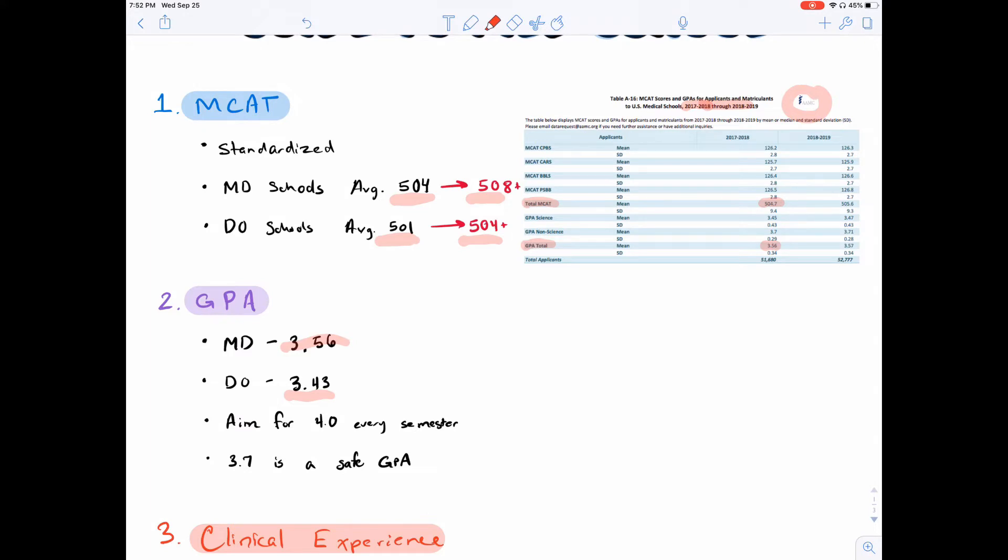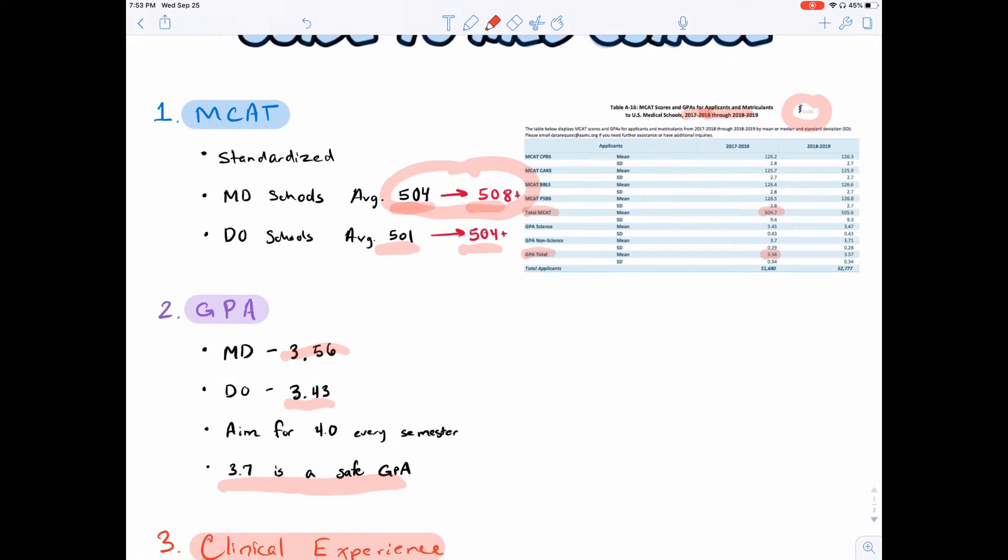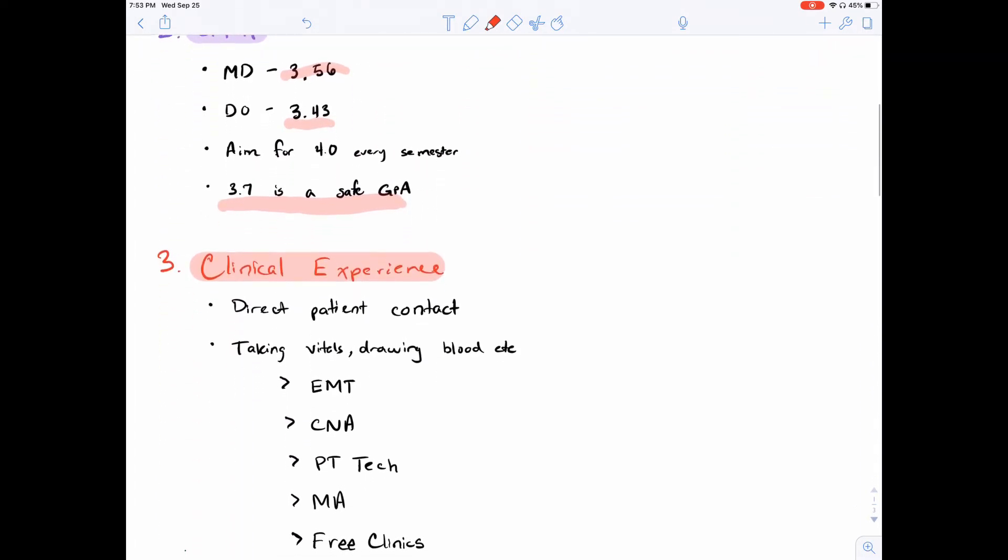Again, my advice for everyone is to really aim for a 4.0 every semester. Obviously, you're not going to get it when you get to those higher-level science courses. Getting a 4.0 while you're juggling all of your volunteering, your jobs, so many things, it's not going to be possible. But if you aim for it, then you are more likely to land something close to that. I would say, on average, 3.7 is considered a safe GPA. In other words, a competitive GPA. Again, what I mean by that is if you have a 3.7 and your MCAT is somewhere in this range, then your chances of getting accepted are quite high. And there's not really much I can say about GPA rather than just as you go through your undergraduate career, really try to get A's in all those classes, in all your classes.